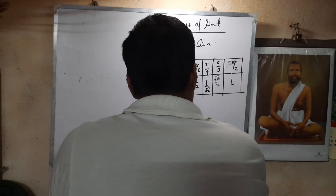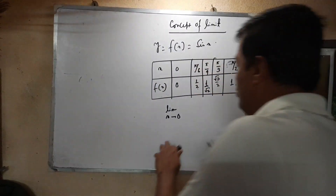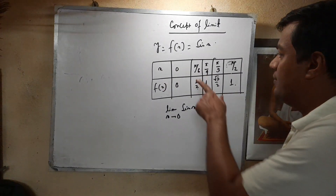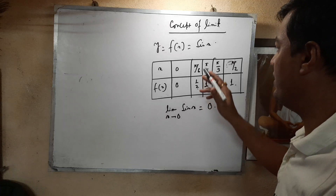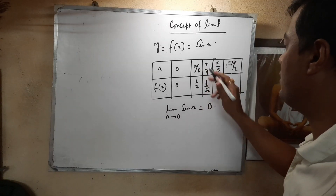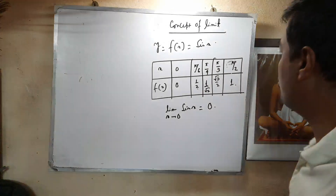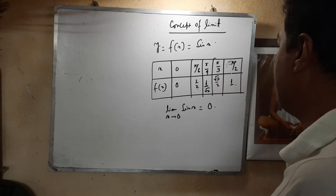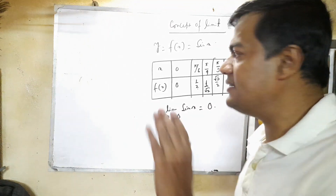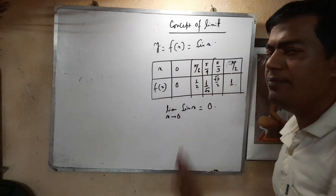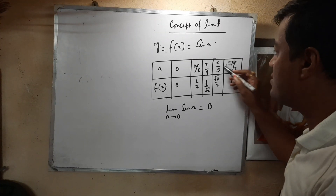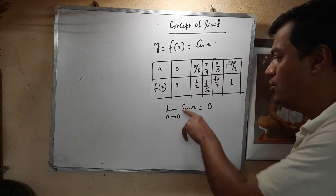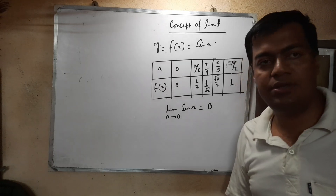So we can say: limit as x tends to 0 of sin x = 0. From the table: when x = 0, sin x = 0; when x = π/6, sin 30° = 1/2; when x = π/4, sin 45° = 1/√2; when x = 60°, sin 60° = √3/2; and sin 90° = 1. In the first quadrant, when x approaches 0, sin x also approaches 0. Therefore, limit x tending to 0 of sin x = 0.